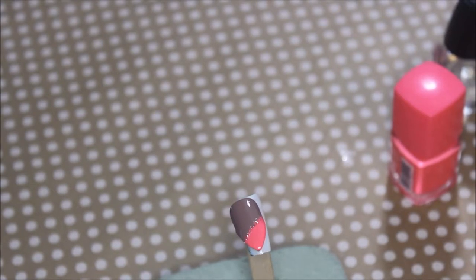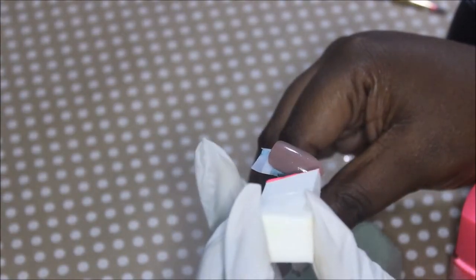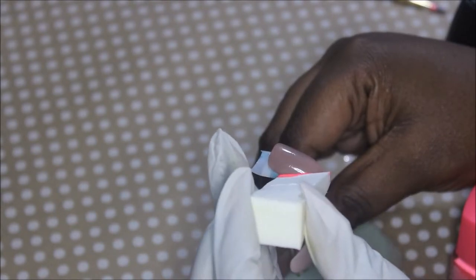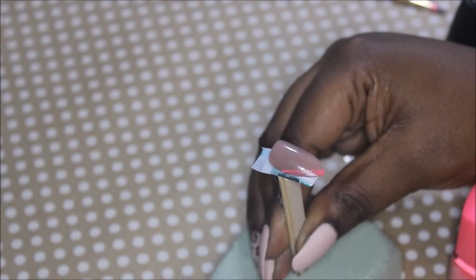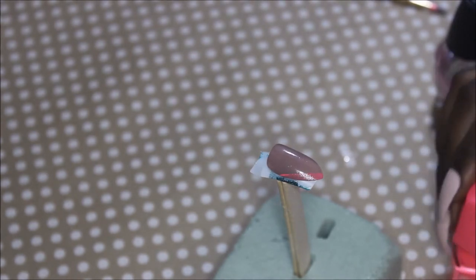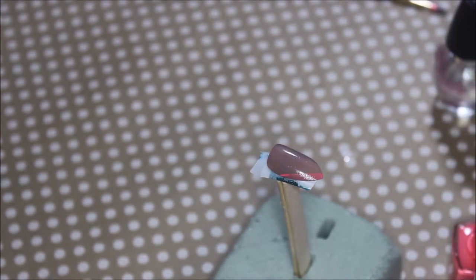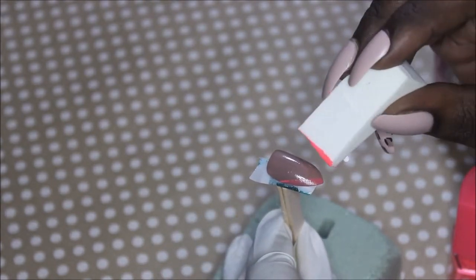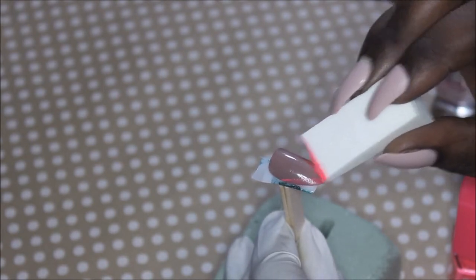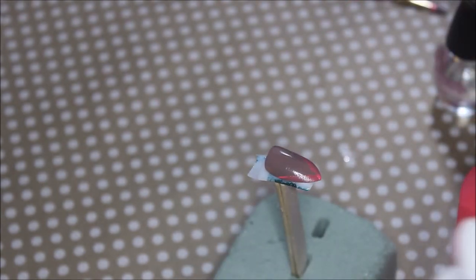For this next one, I'm using the makeup sponge again, putting two lines down the side of the nail. Again, just doing this to have a guide because I'm going to go back with the fingernail polish brush to make it darker and more opaque. It's helpful for the precision I wanted.